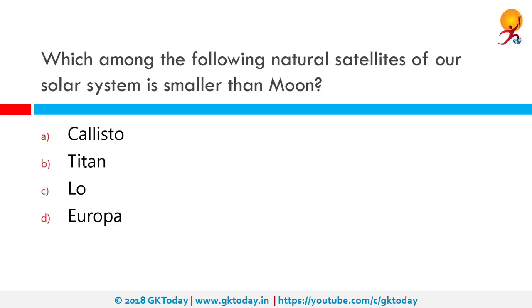Which among the following natural satellites of our solar system is smaller than the Moon? The correct answer is Europa. Europa is the smallest of the four Galilean moons orbiting Jupiter and the sixth largest moon in the solar system. Europa was discovered in 1610 by Galileo Galilei and was named after Europa, the mythological mother of King Minos.